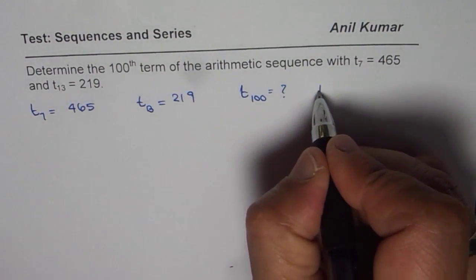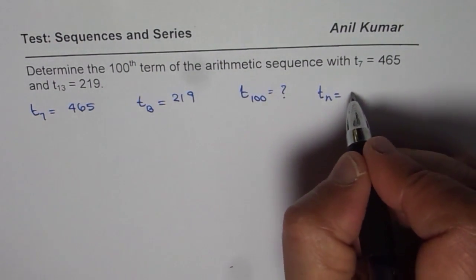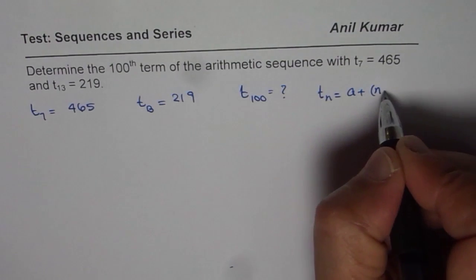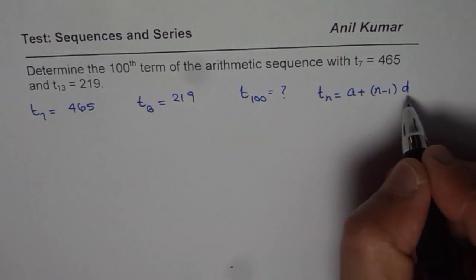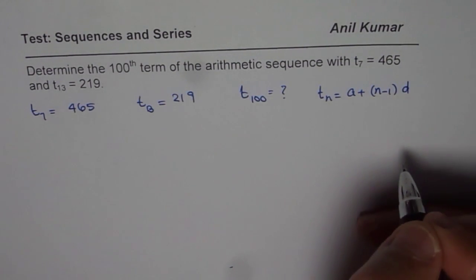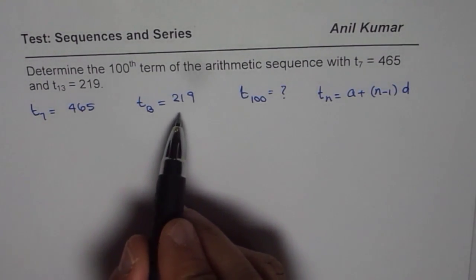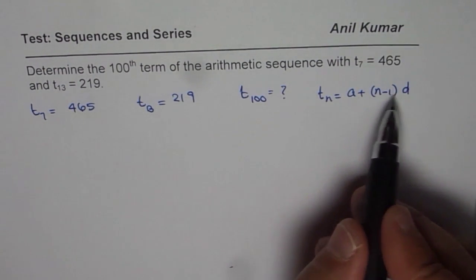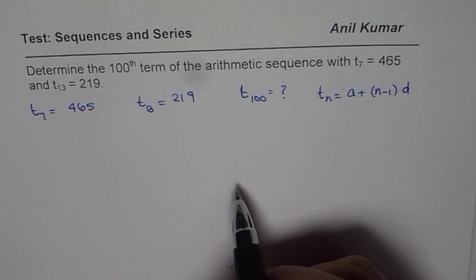So when it is an arithmetic series, the general term is given as A plus N minus 1 times D, where D is the common difference and N is the number of the term. Now using these two given terms, we can actually find A and D. Once we find A and D, we can find T100.